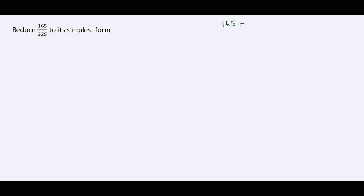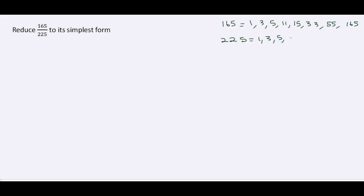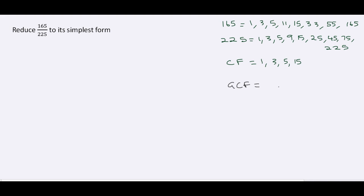Finally, we have 165 over 225. The factors of 165 are 1, 3, 5, 11, 15, 33, 55, and 165. The factors of 225 are 1, 3, 5, 9, 15, 25, 45, 75, and 225. Our common factors are 1, 3, 5, and 15, and the greatest common factor is 15.